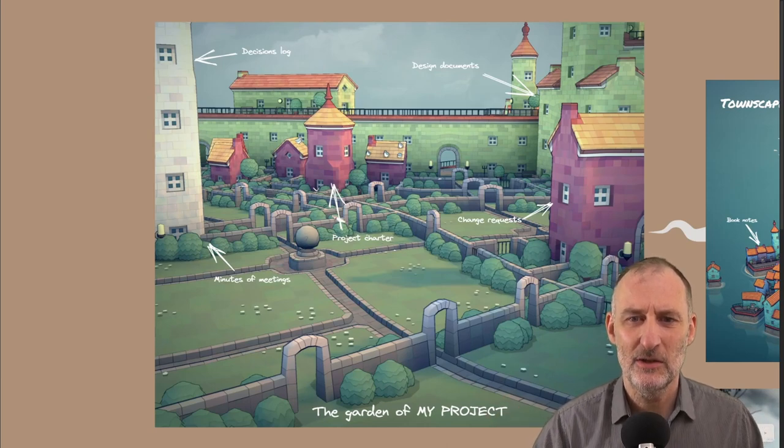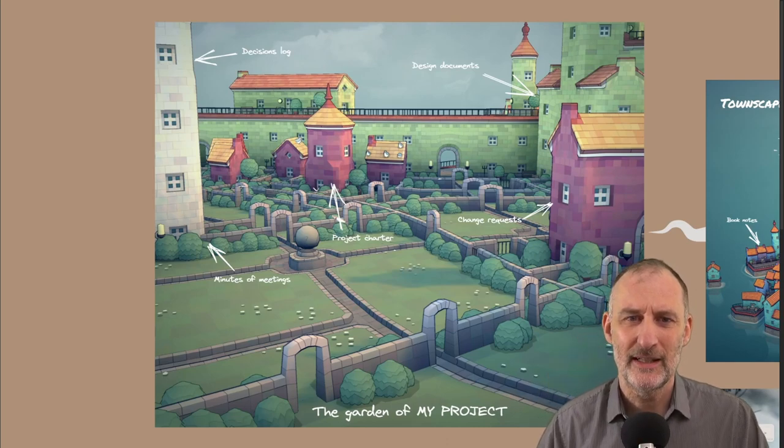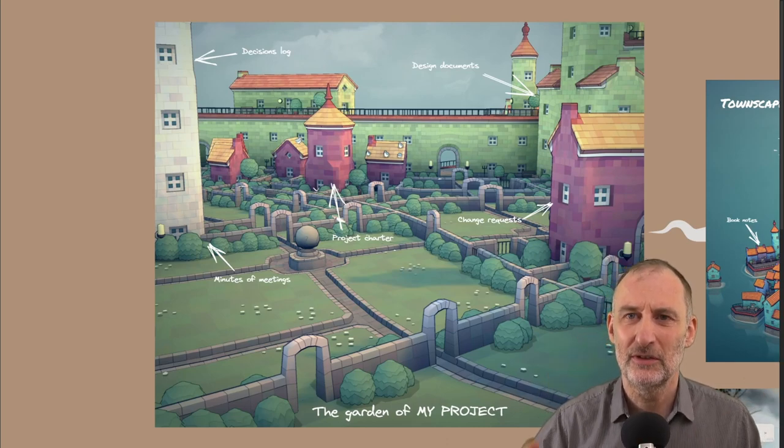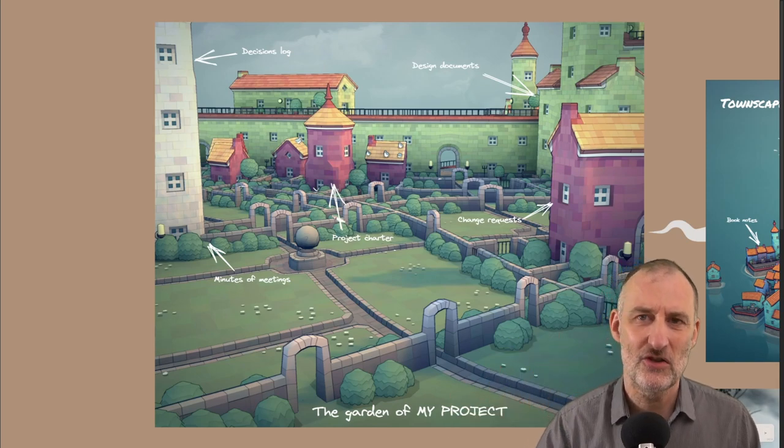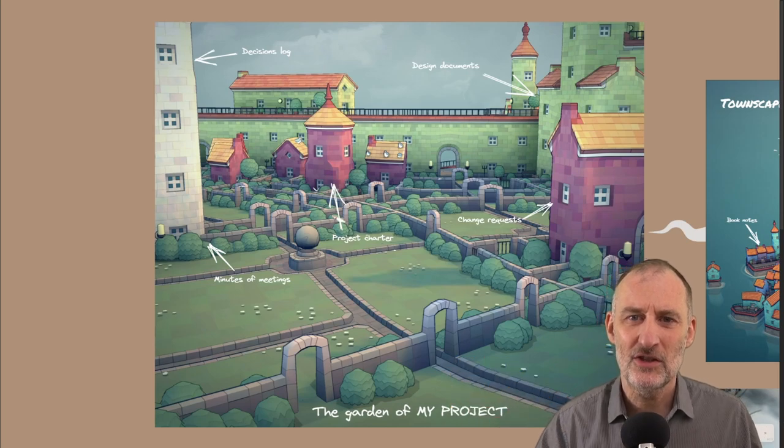And maybe if you zoom in to the garden of one of my projects, then you will see that I will have the minutes of meeting in one place, the decision log in another, the project charter in one place, the design documents, the change requests, etc. in different locations.